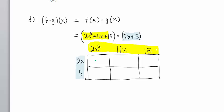To fill in this box, we multiply 2X squared times 2X. That's 4X to the third power. To fill in this box, we multiply 2X times 11X. That's 22X squared. To fill in this far right box on the top, 2X times 15 is 30X. To fill in this box, 2X squared times 5. That's 10X squared. To fill in this box, 5 times 11X is 55X. This box over here, 5 times 15 is 75.